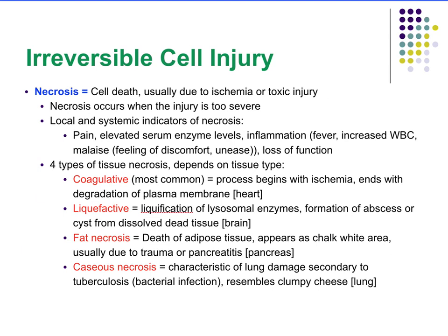Moving on to irreversible types of cell injury — starting with necrosis, which is cell death usually caused by ischemia or some sort of toxic injury. Necrosis typically occurs when injury is too severe. Indicators include pain in the area, elevated serum enzyme levels from blood work, and signs of inflammation: fever, increased white blood cell count, and malaise — a general feeling of discomfort and unease.